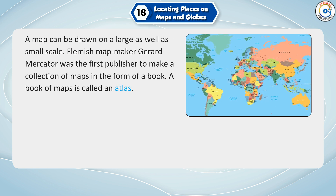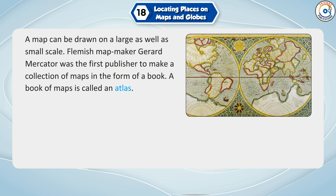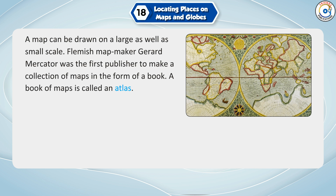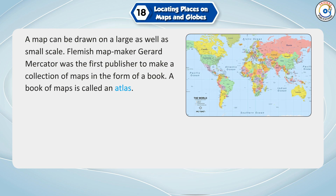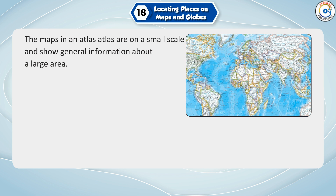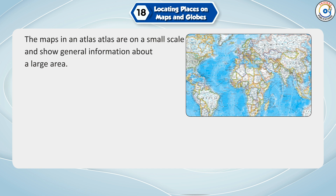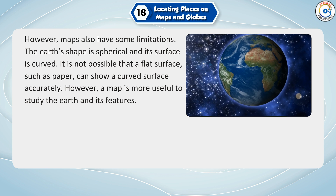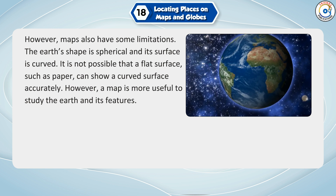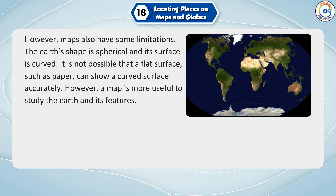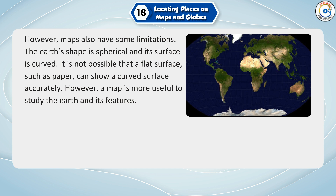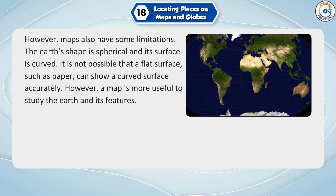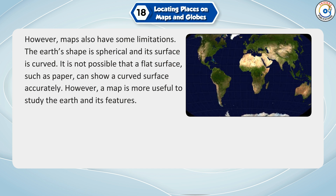A map can be drawn on a large as well as small scale. The Flemish mapmaker Gerard Mercator was the first publisher to make a collection of maps in the form of a book. A book of maps is called an atlas. The maps in an atlas are on a small scale and show general information about a large area. However, maps also have some limitations. The earth's shape is spherical and its surface is curved, so a flat surface such as paper cannot show a curved surface accurately. Nevertheless, a map is more useful to study the earth and its features.